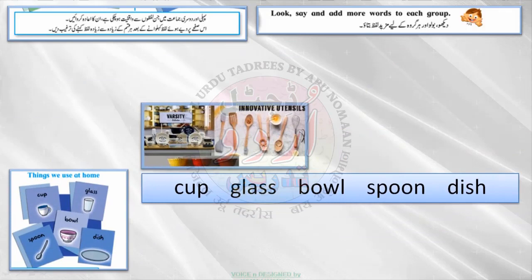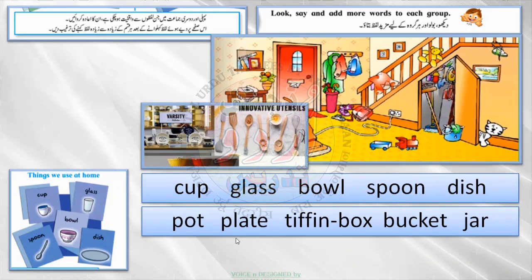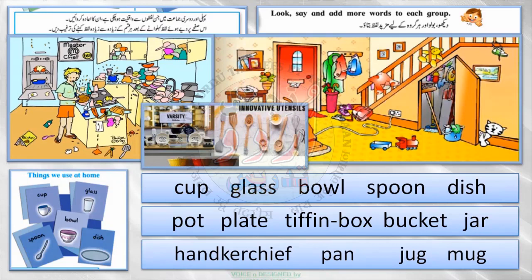Our next group is things we use at home. What are those things? Cup, glass, bowl, spoon, dish, pot, plate, tiffin box, bucket, jar, handkerchief, pan, jug, mug. These are only some examples; you can add more and more because there are so many things we have at home.